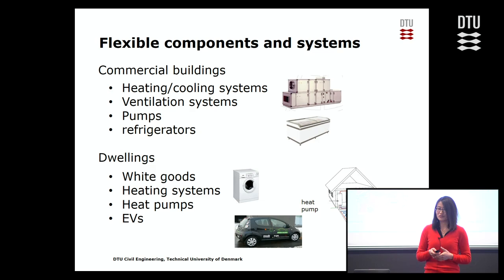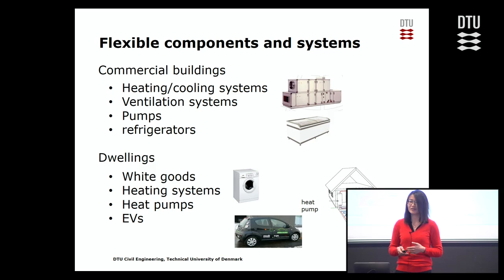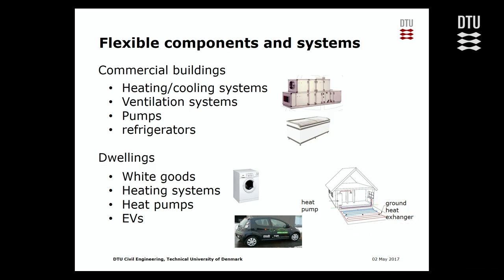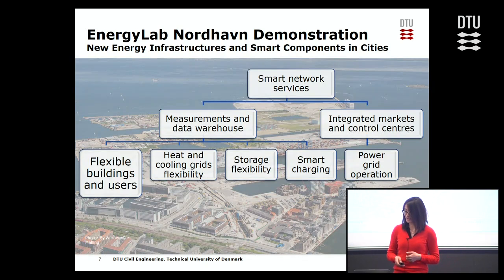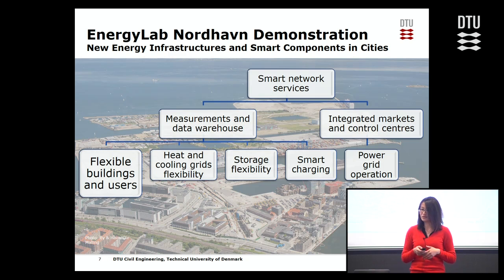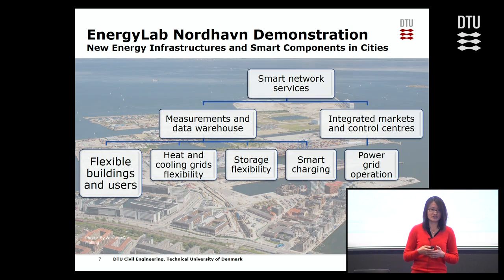In buildings, white goods such as dishwashers and washing machines, heating systems, heat pumps, and EVs have potential to be flexible. For example, EVs can be charged when power generation is at the peak. Based on this concept, a few pilot projects have been developed in Denmark. For example, Energy Lab NOHA demonstration project is one of them. In this project, smart charging, energy storage systems, heating and cooling grids, flexible buildings, and users are investigated in order to provide flexibility for the energy grid.